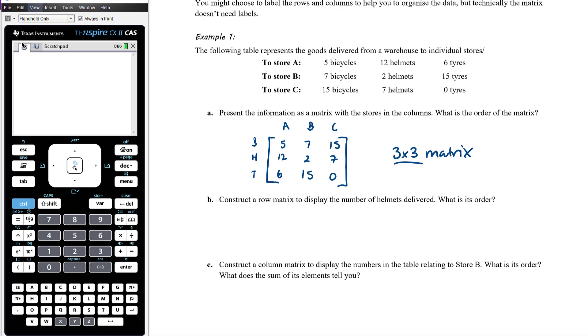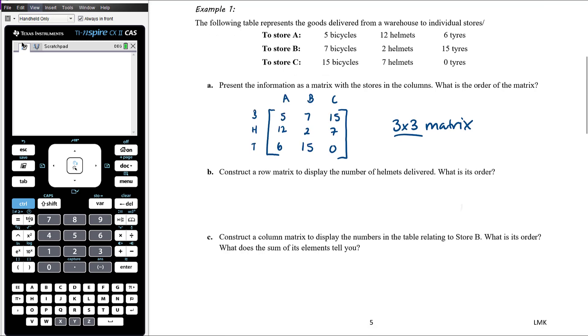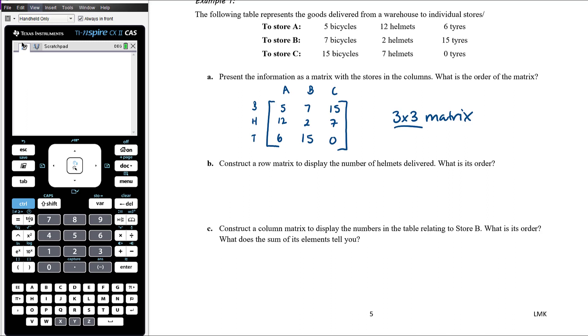Construct a row matrix to display the number of helmets delivered. So remember, a row matrix is simply a matrix with just one row. And we want it to be a row with the number of helmets delivered. So that is going to be, essentially, that information there. So, number of helmets, it's going to be twelve, two and seven.